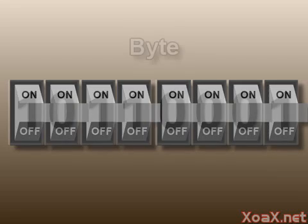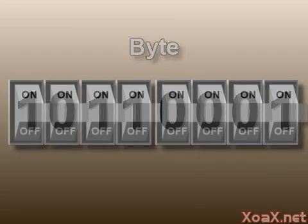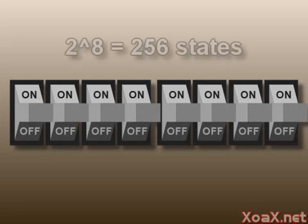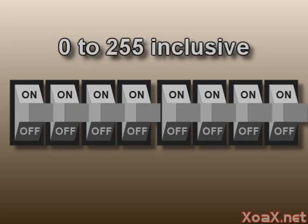A single memory location in a typical computer is comprised of eight of these switches, which represent what is called a byte of data. With eight switches, we have 2 to the 8, equal to 256 possible states.